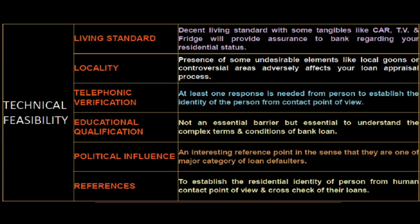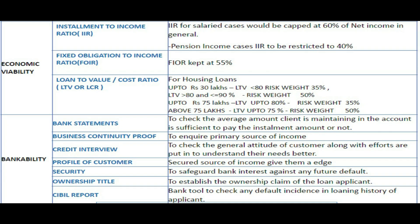Educational qualification is not an essential barrier but is important to understand complex terms and conditions. Political influence is an interesting reference point, as they are a major category of loan defaulters. References help establish residential identity and cross-check loans. In economic viability, we examine installment-to-income ratio, fixed obligation-to-income ratio, and loan-to-value ratio. In bankability, we check bank statements, business continuity proof, credit profile, security ownership title, and CIBIL report.